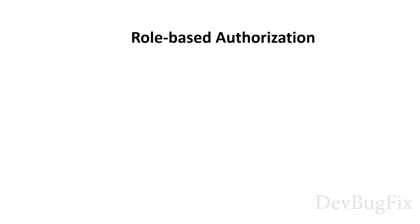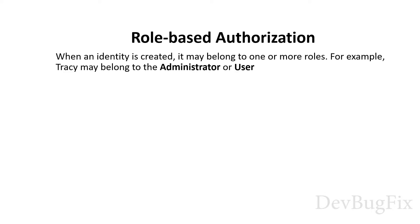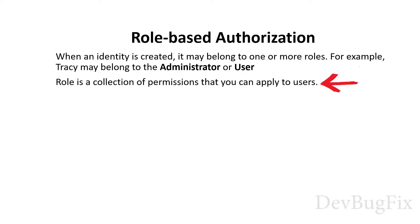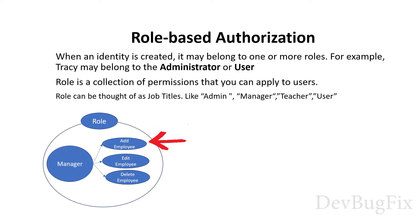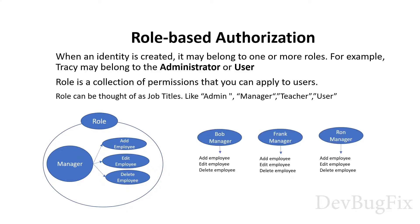First we will discuss role based authorization. What is role based authorization? When an identity or user is created, it may belong to one or more roles. For example, Teresa may belong to the administrator or user role. We know admin has more permission than user. A role is a collection of permissions that you can apply to users. Roles can be thought of as job titles like admin, manager, teacher, and user. We have a manager role which has the following permissions: add employee, edit employee, and delete employee. We can assign this role to any user. We have three users who have the manager role, so all of them can add, edit, and delete employees.